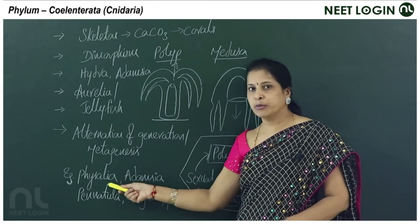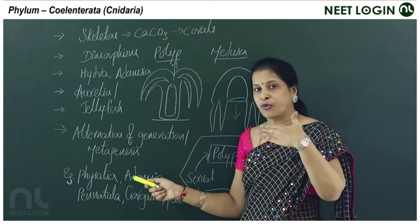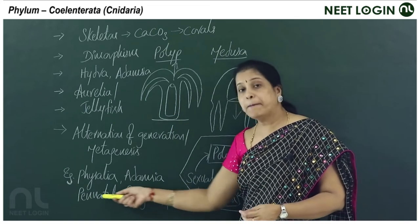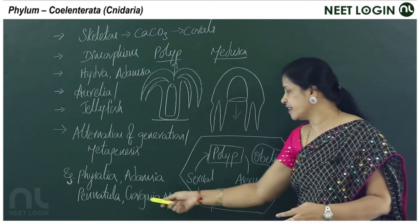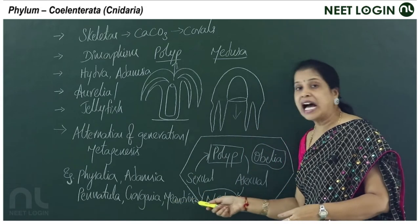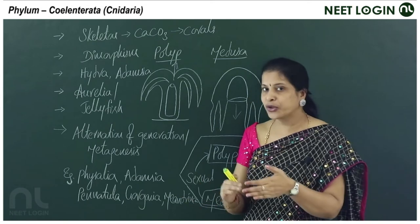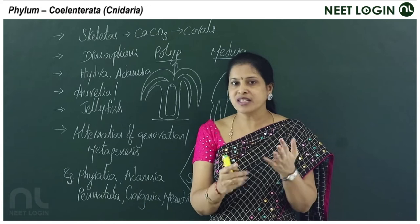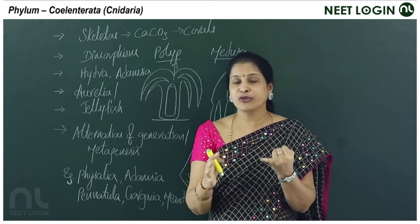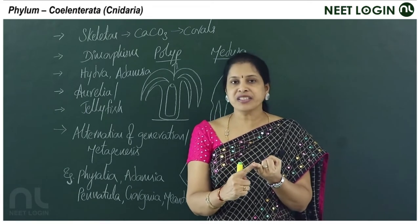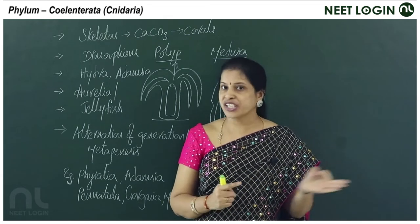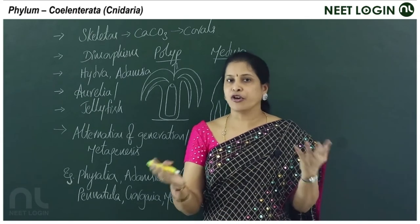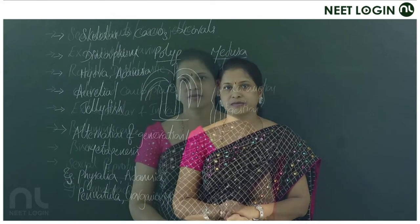Examples of cnidarians: Physalia (Portuguese man-of-war), Adamsia (sea anemone, a polypoid form), Pennatula (sea pen), Gorgonia (sea fan), and Meandrina (brain coral). Corals are semi-precious stones. Key points to remember: cnidoblast or cnidocyte cells for defense, dimorphic nature of polyp and medusoid forms, and alternation of generations in Obelia.